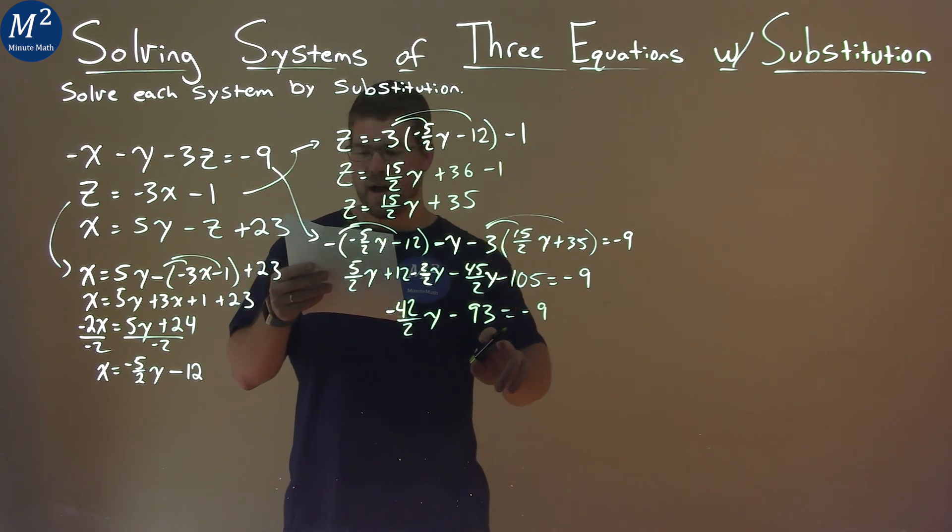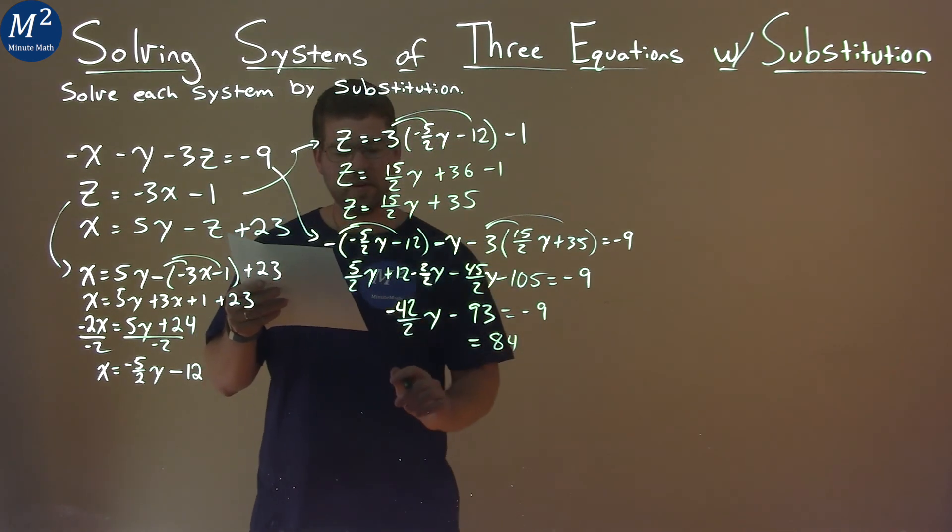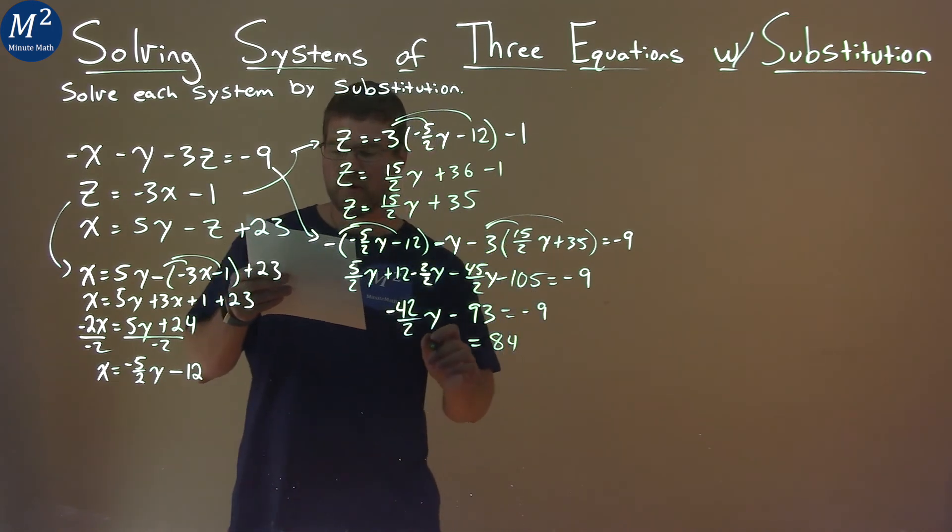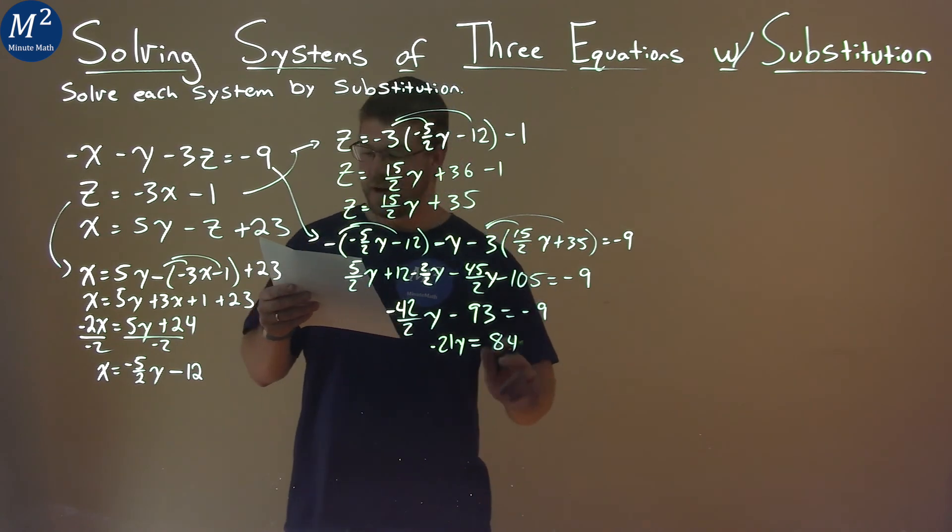We add 93 to both sides. That's my next step. And then 84. And 2 goes into 42, it goes 21 times. So we have negative 21y here. Divide negative 21 to both sides, and y equals negative 4.